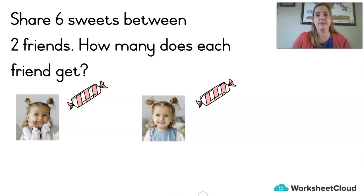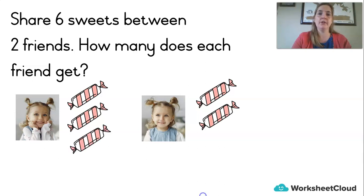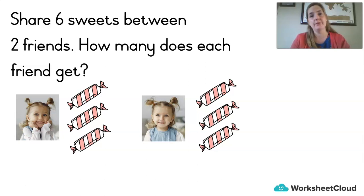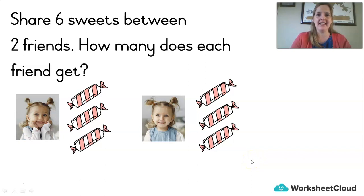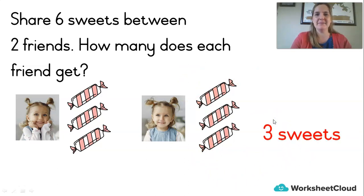One for you, one for you — that's how you share. When you share, always do one for you, one for you. Don't try to guess and give one person four, and then find out you only had two left for the other person. Tip one: draw the people first. Tip two: always one for you, one for you. And how many did each friend get? They each got three sweets. Don't forget to write the word as an answer — three sweets!